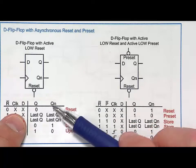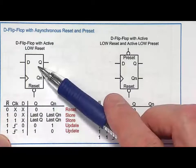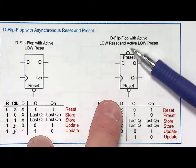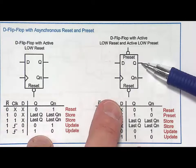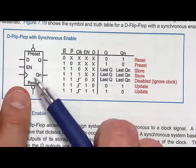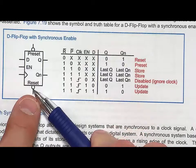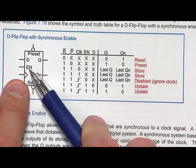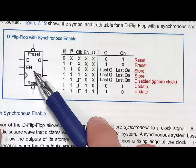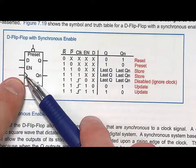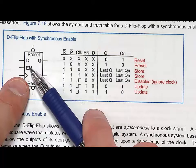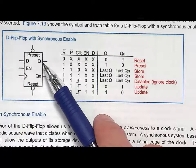In the truth table, reset is the top priority and drives Q to zero and Q-bar to one. When reset is inactive, the D flip-flop enters normal operation. A preset line sets Q to one — presets and resets are typically both active low. You can also add an enable to a D flip-flop: reset remains the highest priority, the clock keeps running, but Q is only updated on the rising edge when enable is asserted. If enable is not asserted, the flip-flop holds its prior value.